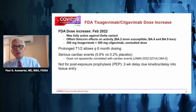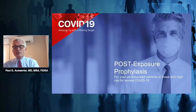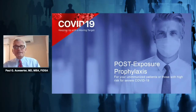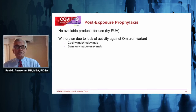In the initial Evusheld study, there were more cardiac events in the active arm in patients with pre-existing cardiac disease, which practitioners should discuss with patients when considering it. It is not approved for post-exposure prophylaxis. Drugs previously approved for post-exposure prophylaxis — casirivimab/imdevimab and bamlanivimab/etesivimab — have been withdrawn because, although backed by studies, they had no sufficient activity against Omicron. We are currently left with no post-exposure prophylaxis interventions, making vaccination encouragement even more critical.